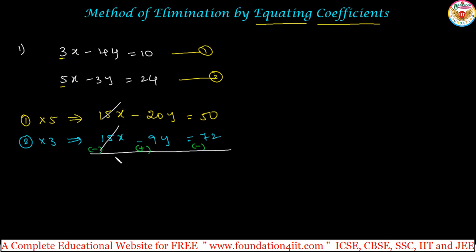If you want to subtract, 15x minus 15x cancel, minus 20y plus 9y, so minus 11y. 50 minus 72, so minus 22. Can cancel the minus and y is equals to 22 by 11. So y is equals to 2.